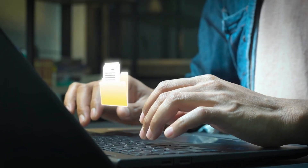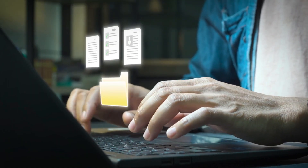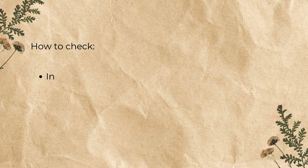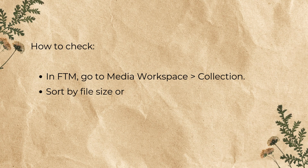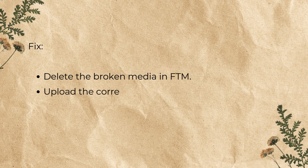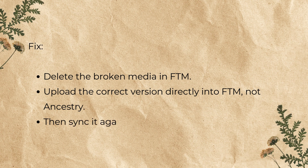Step 5: Replace proxy media. Media added directly on Ancestry may not sync properly, especially if added on Fridays and weekends. In FTM, go to Media Workspace Collection and sort by file size or date. Look for media with zero kilobytes file size or URLs like ancestrycdn.com/proxy. To fix it, delete the broken media in FTM, upload the correct version directly into FTM — not Ancestry — then sync it again. This keeps the local copy solid.